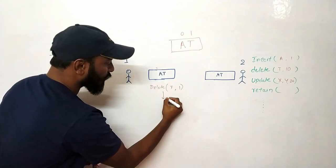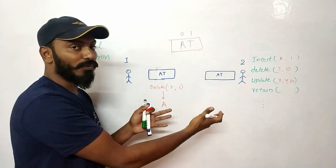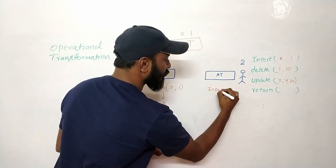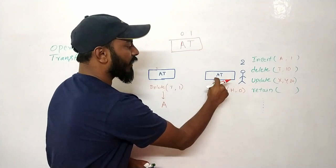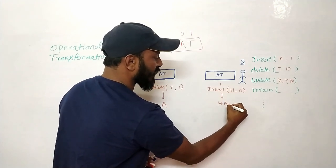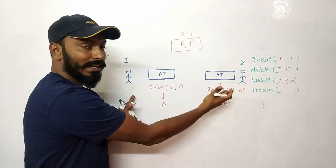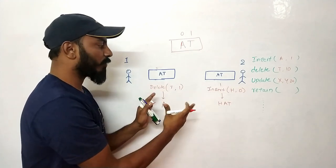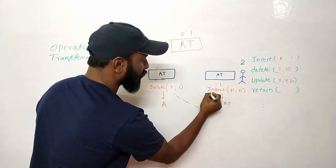Now both users start editing at the same time. User 1 intends to delete 'T', so he performs: delete 'T' at position 1. His local document state becomes 'A'. Meanwhile, user 2 wants to insert 'H' at position 0 to make the word 'HAT'. So he performs: insert 'H' at position 0. His document state becomes 'HAD'. Both operations are correct on their own — now they need to be transferred to each other.